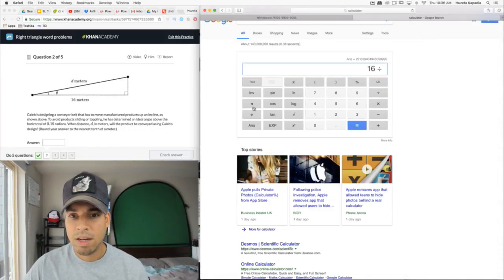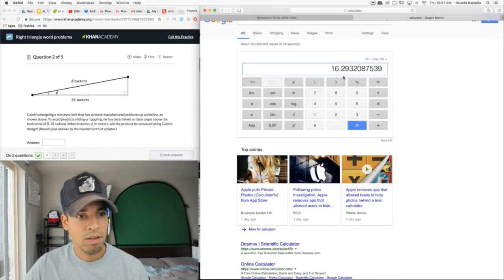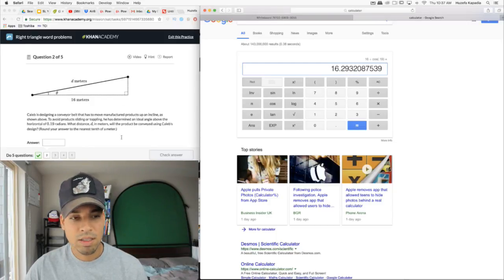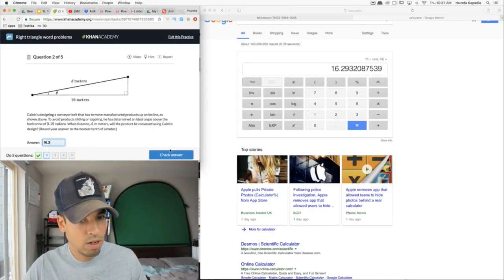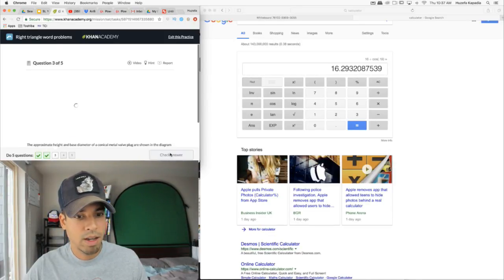D is isolated, and this is our answer. Now we just plug it into the calculator. 16 divided by cosine of 0.19 equals 16.29. Round to the nearest tenth, that's 16.3. Let's see if that's correct. Excellent. Next question.